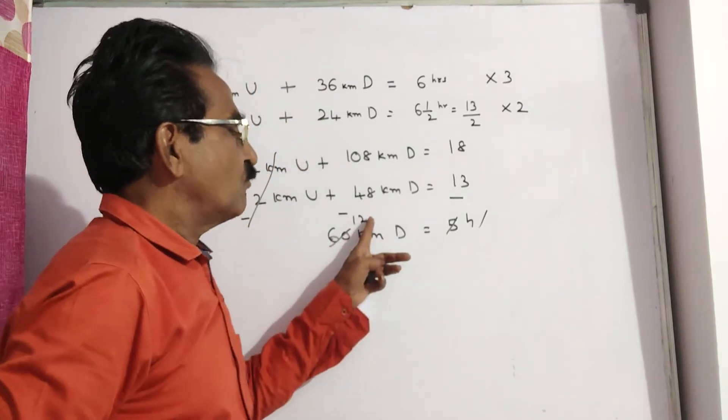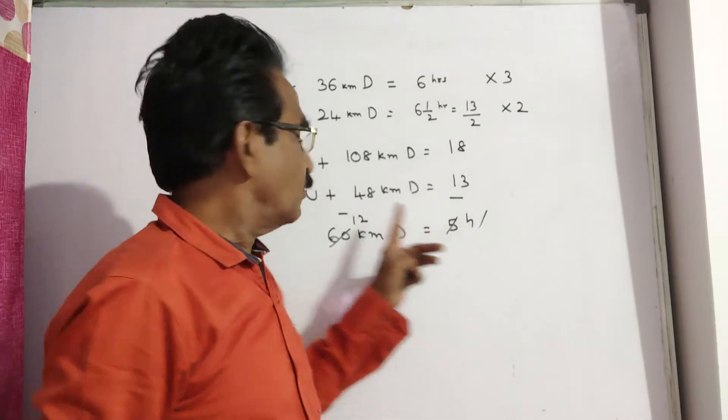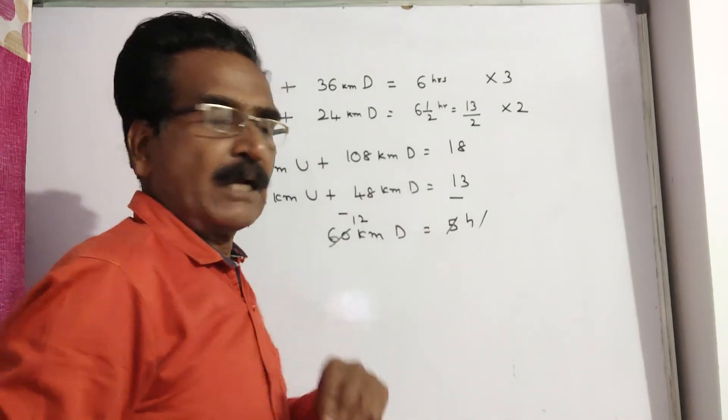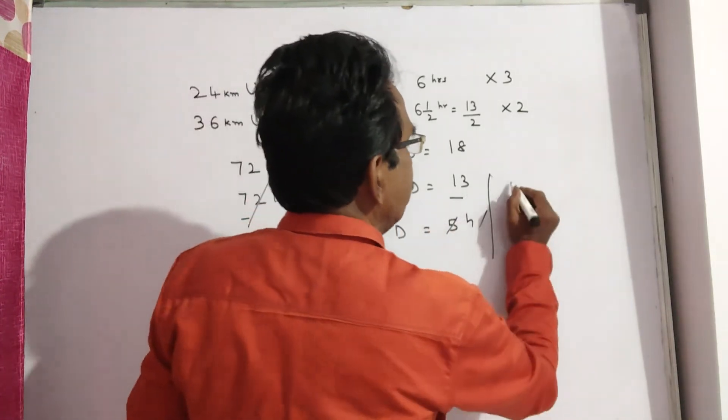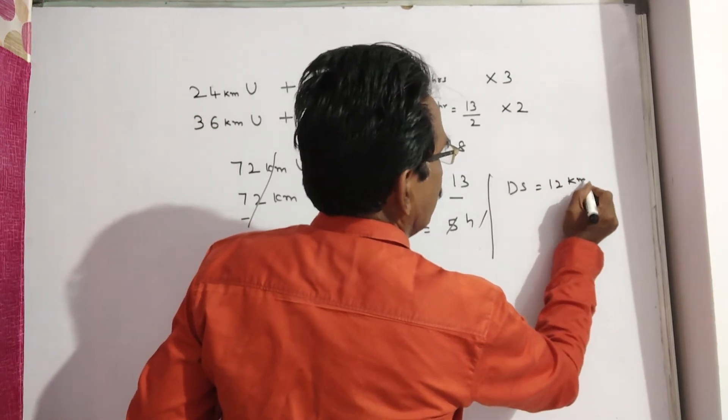That means 12 kilometers downstream in 1 hour. So downstream velocity is equal to 12 kmph.